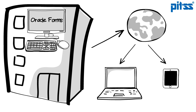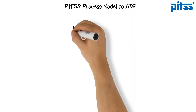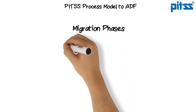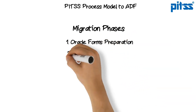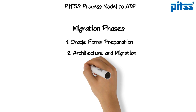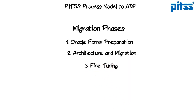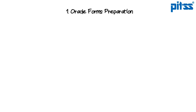In the next minutes, I will explain the PITS process model to ADF. This model is separated into three phases. First, the preparation phase for the Forms modules. Second, the architecture and migration phase. Third, the fine-tuning of the RDF artifacts. Let's start with the Oracle Forms preparation phase.